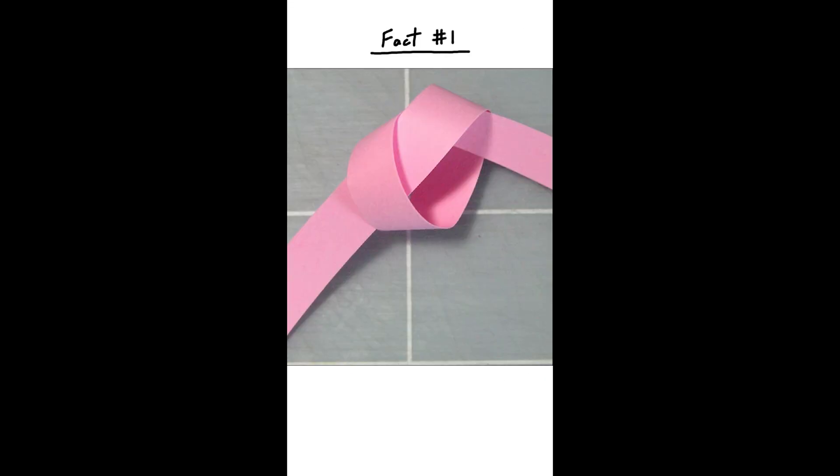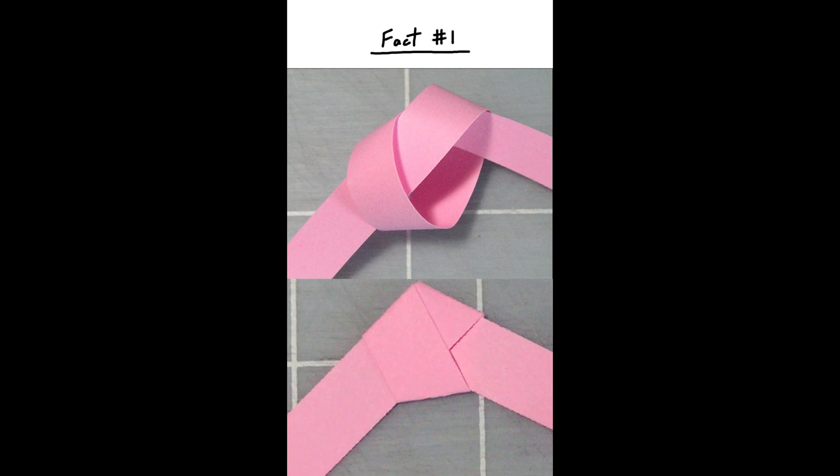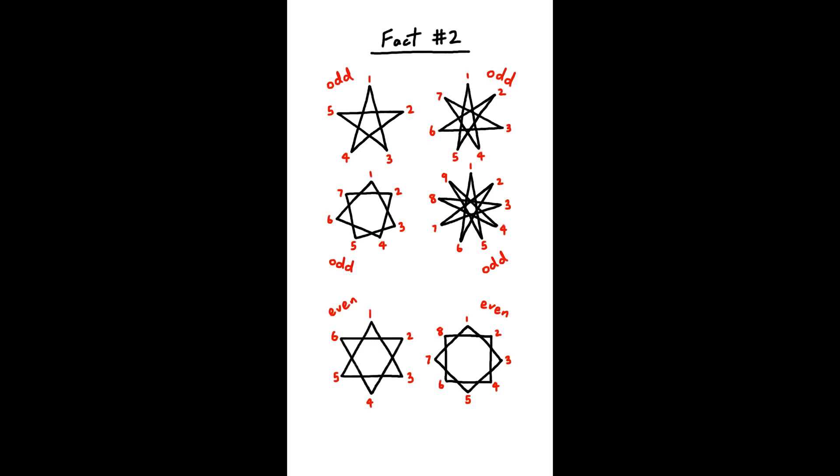First, you can tie a knot into a regular pentagon. All you need is a strip of paper and some patience. Second, it's impossible to draw a fully connected star with an even number of vertices. They just end up being several different polygons within each other.